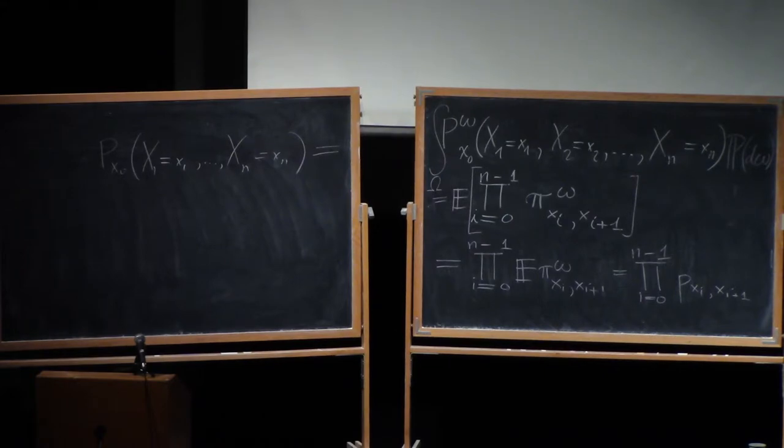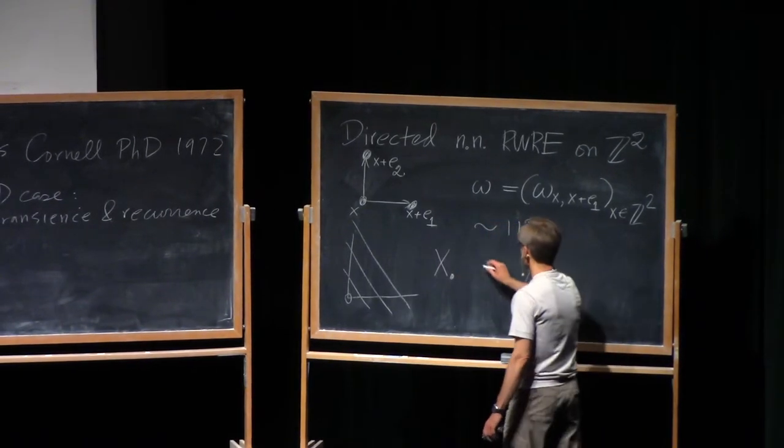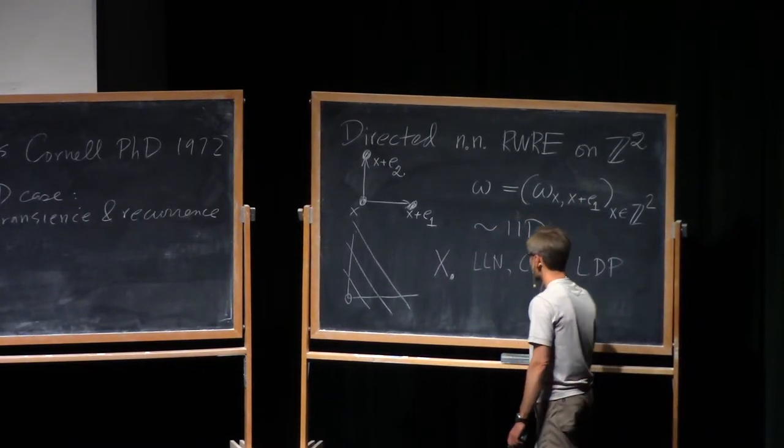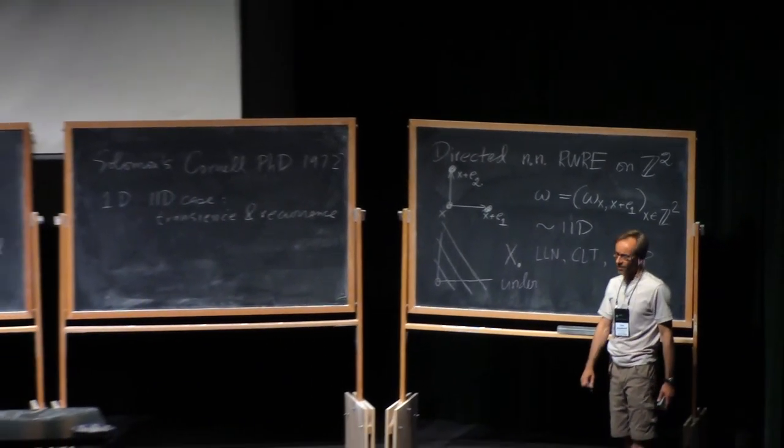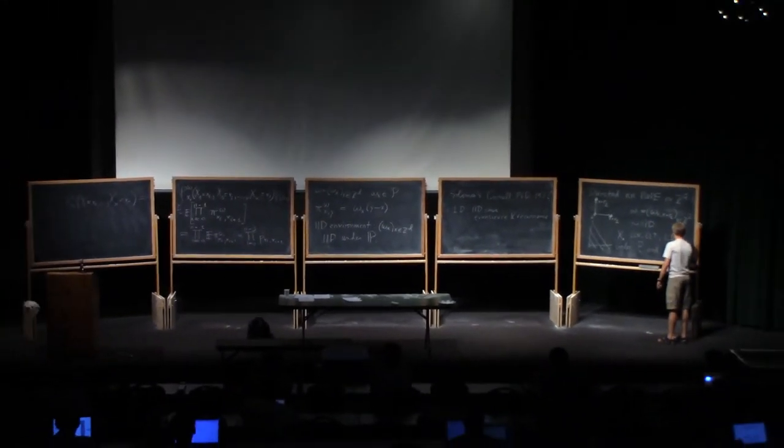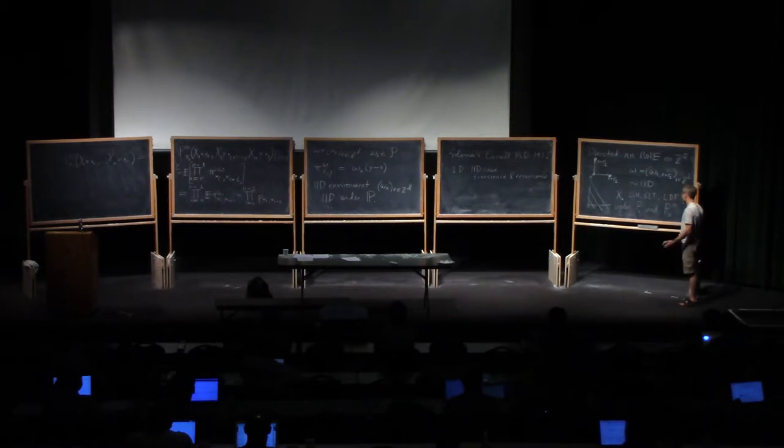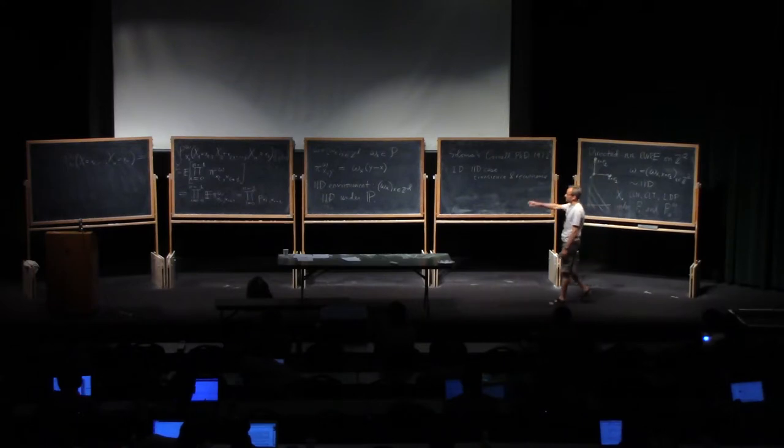So this simplification allows us to do a lot with this kind of a model. So under these assumptions here, this walk X dot satisfies all the classical results. So it has a law of large numbers, a central limit theorem, a large deviation principle. Now it's obvious that it has these properties under the average measure P because then it's just a classical random walk. But it's also the case that it has these same properties under the quenched distribution. So the first statement is immediate from classical results. The second ones need proof, not the law of large numbers because an almost sure law of large numbers under P implies the same under P omega for almost every omega. But the other two results need proof. I don't need the CLT going forward, but I do want to record the law of large numbers and the LDP.